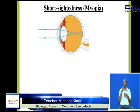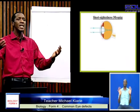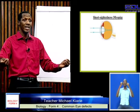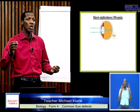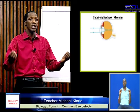The first defect we have is what we call myopia. Myopia is also called short-sightedness. A short-sighted person can clearly focus the image of objects that are near the eye — they can see clearly objects that are near. However, distant objects cannot be focused clearly by the eyes.